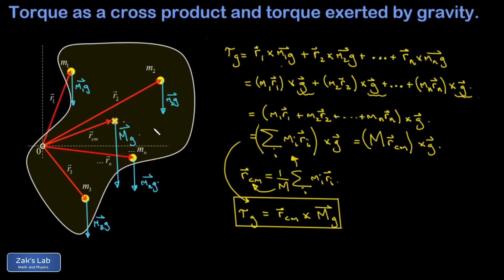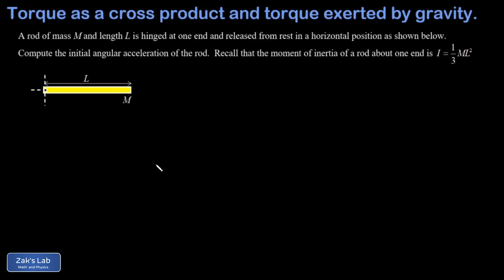You find the weight at that point, then use r cross f to find the torque. So we've got our formula. Now let's apply it to a simple example: a rod of mass m, length l, hinged at one end, with moment of inertia (1/3)ml² for rotation about that end.